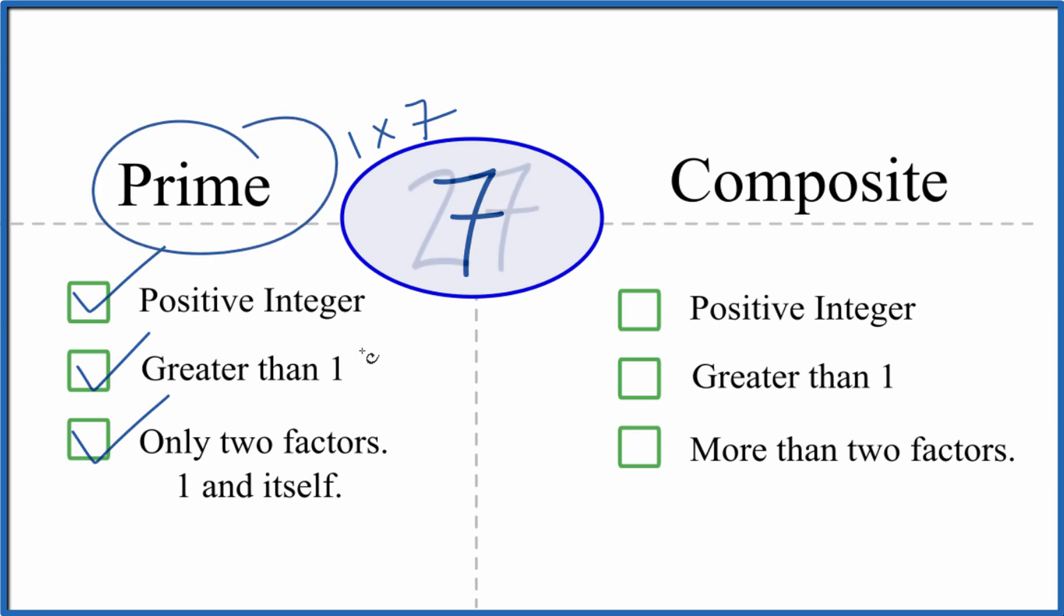Let's try another one. Is 27 prime or composite?